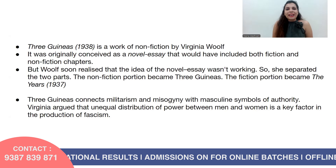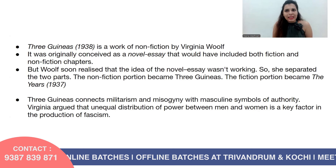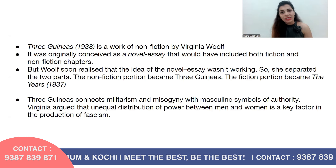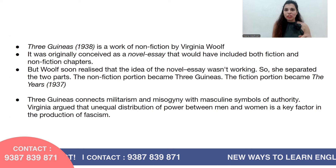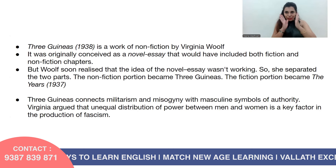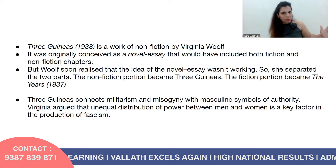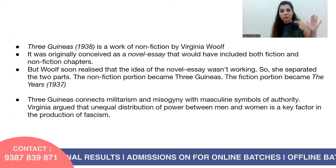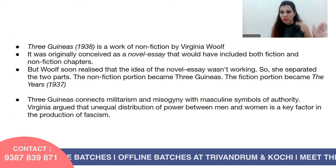Three Guineas (1938) is a work of non-fiction by Woolf. It was originally conceived as a novel-essay combining fiction and non-fiction, but Woolf realized the format wasn't working and separated the two parts. The non-fiction became Three Guineas (1938), while the fiction became the novel The Years (1937). Three Guineas connects militarism and misogyny with masculine symbols of authority, arguing that the unequal distribution of power between men and women is a key factor in the production of fascism.